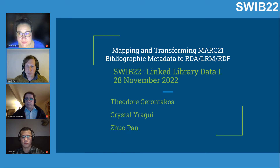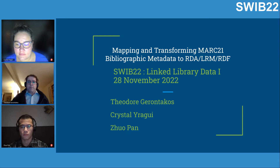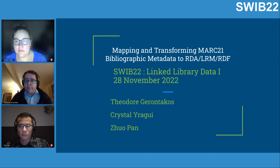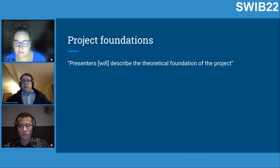We're starting with the first talk: 'Mapping and Transforming MARC 21 Bibliographic Data,' from three colleagues at the University of Washington Library. I'm happy to announce Crystal Yaragi and colleagues. The project maps and transforms MARC 21 bibliographic metadata to the linked data format, guided by Resource Description and Access (RDA), aligned with the IFLA Library Reference Model (LRM), and expressed using RDF.